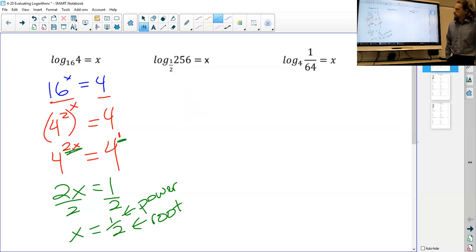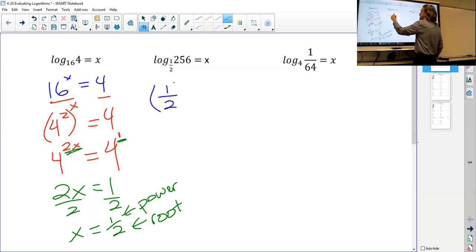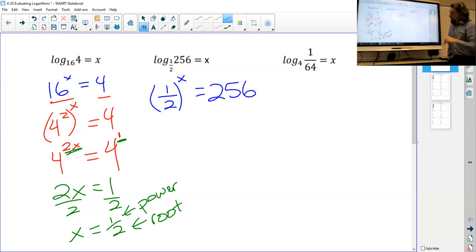Okay, so that's one example. So let's go to our next one. Log base 1 half of 256 equals x. So again, same as before. So base 1 half, so 1 half raised to the x power equals 256. Okay. And again, you say, well, 1 half to what power is 256? If you don't know, then we say, can we get these two at the same base?